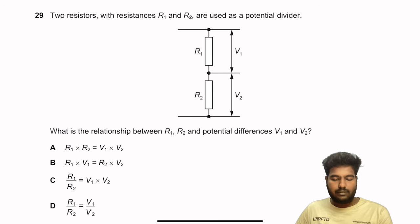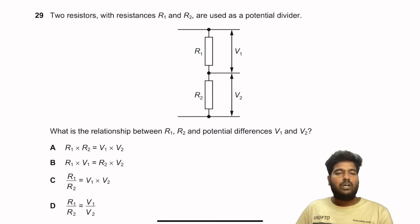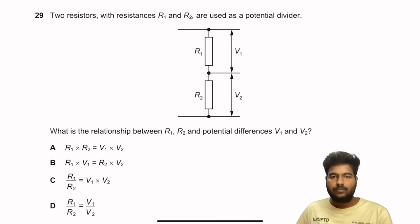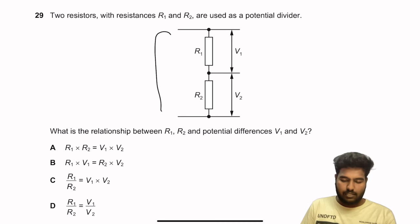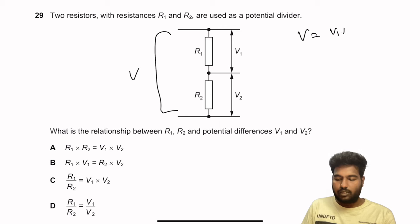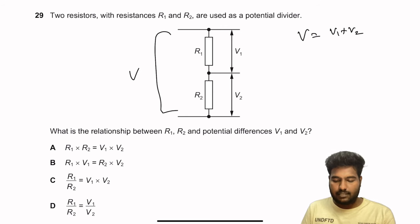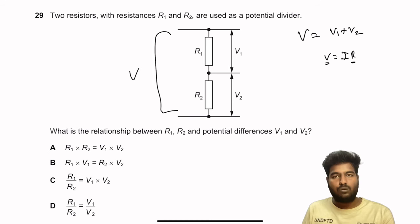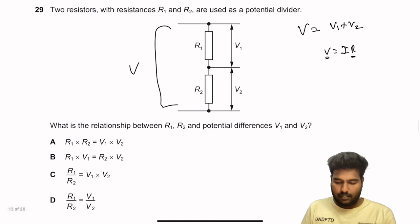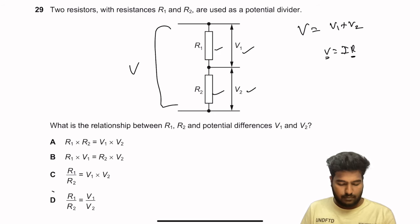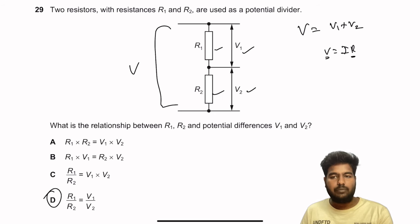Question 29: Two resistors R1 and R2 are used as a potential divider with potential differences V1 and V2. The total voltage is V1 + V2. Since V = IR and the current is the same through both, voltage is proportional to resistance. So V1 ÷ V2 = R1 ÷ R2, meaning R1 ÷ R2 = V1 ÷ V2. D is the right answer.